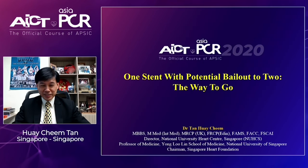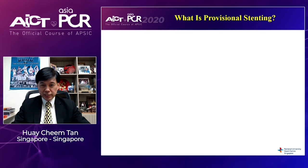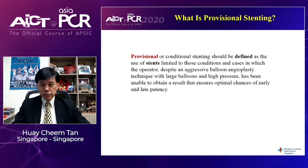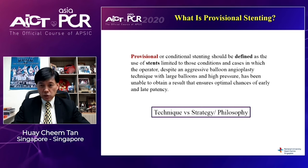Thank you very much, Dr. Chen. I'm going to take a contrarian view by going for one stent with potential bailout to two as being the way to go for bifurcation stenting. Now, what is provisional stenting? Provisional or conditional stenting should be defined as the use of stents limited to those conditions where the operator, despite aggressive balloon angioplasty with large balloons and high pressure, is unable to obtain a result that ensures optimal chances of early and late patency. One can look at provisional stenting as a strategy where one-stent techniques are employed and then subsequently escalated to a two-stent strategy.